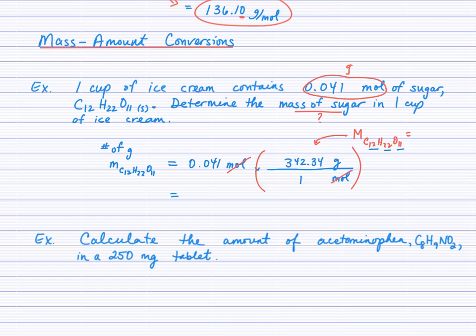So because I've set up factor label for the moles to cancel, that will leave me with the number of grams. 0.041 times 342.34 gives us 14.03594. Now how many sig figs should be in the final answer? You're multiplying. Count the sig figs here. There are two. And count the sig figs in the molar mass here. There are five. So we'll round to two at the end. So we end up chopping it right here. So we end up with 14 grams. So 14 grams of sugar in one cup of ice cream.